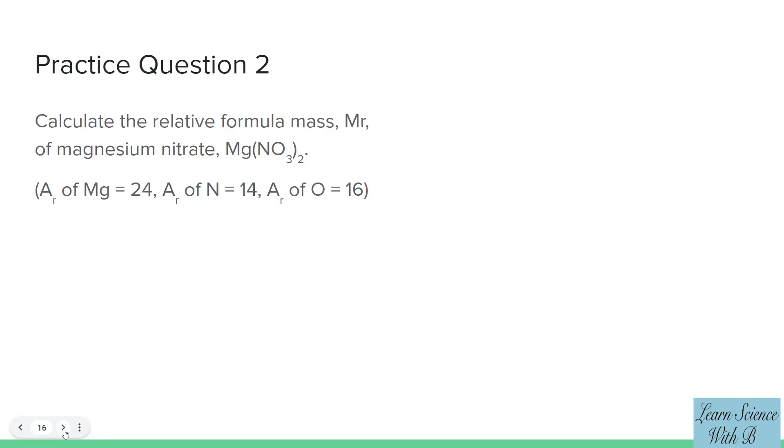Calculate the relative formula mass, MR, of magnesium nitrate, Mg(NO3)2. AR of Mg equals 24, AR of N equals 14, AR of O equals 16. Pause video here.